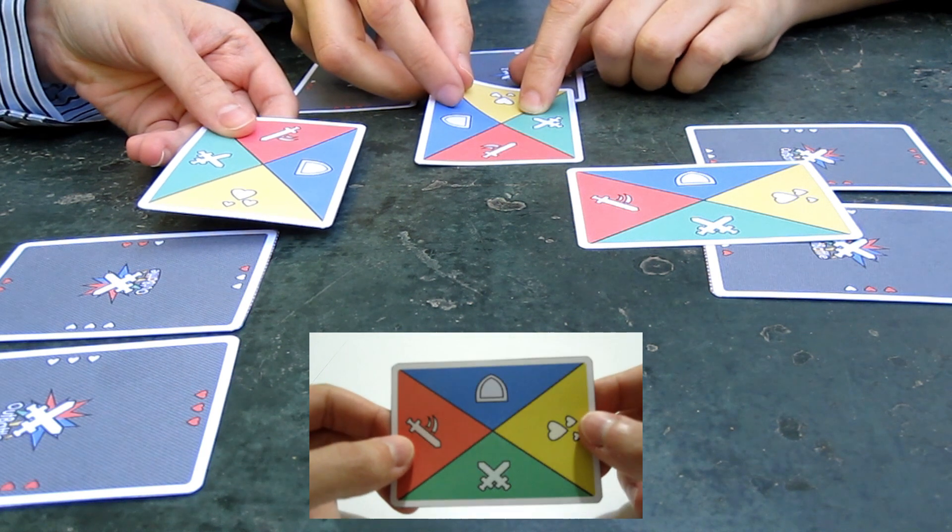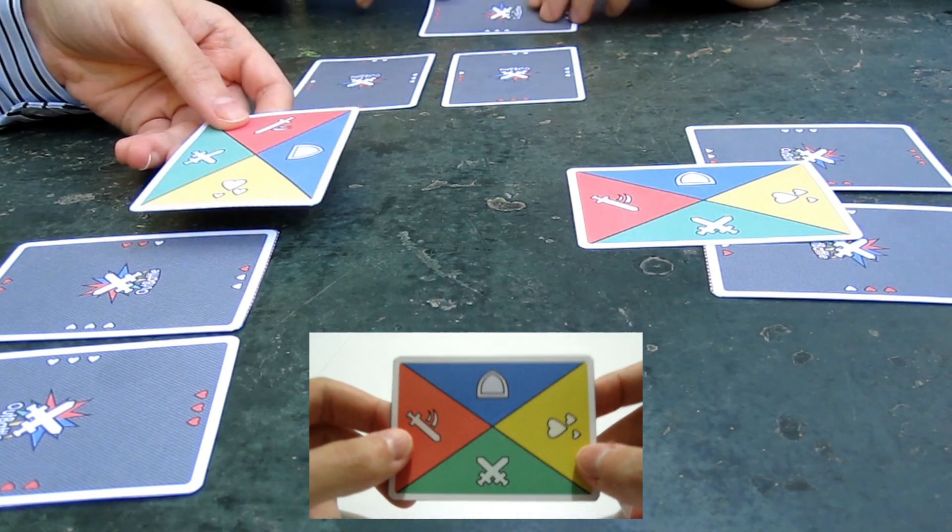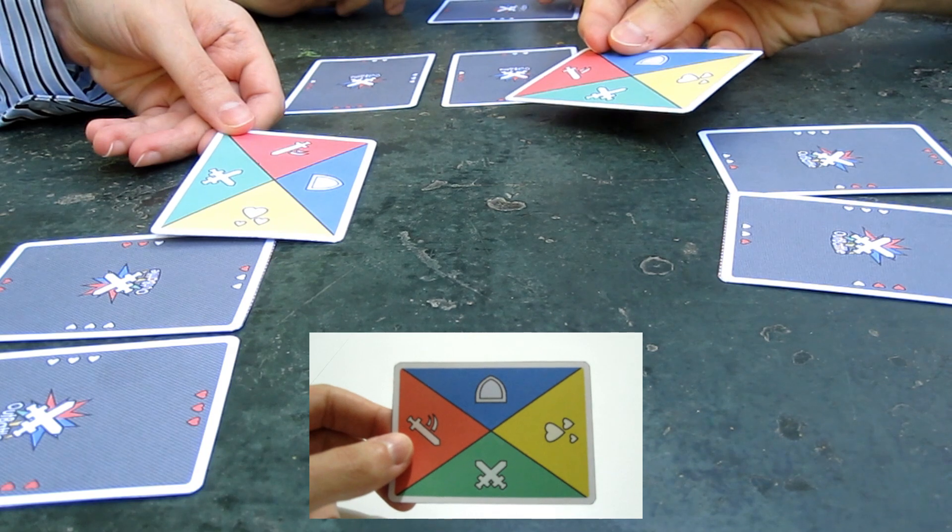If you play Shield, you will avoid any attacks that you receive this turn. But you can only use Shield every other turn.